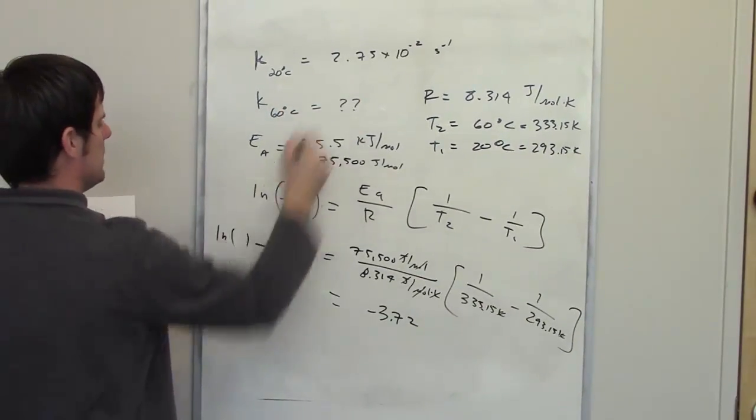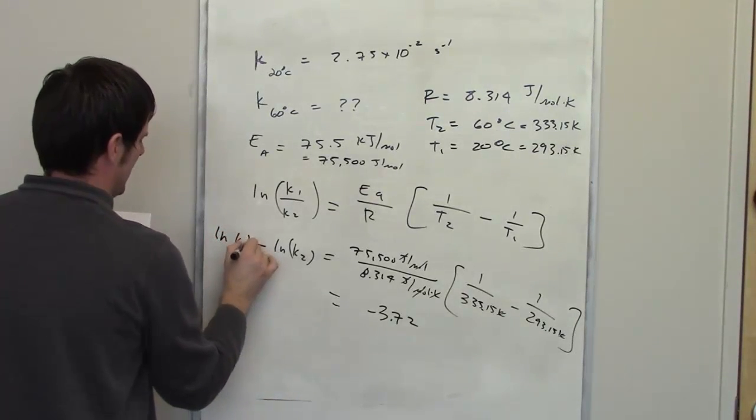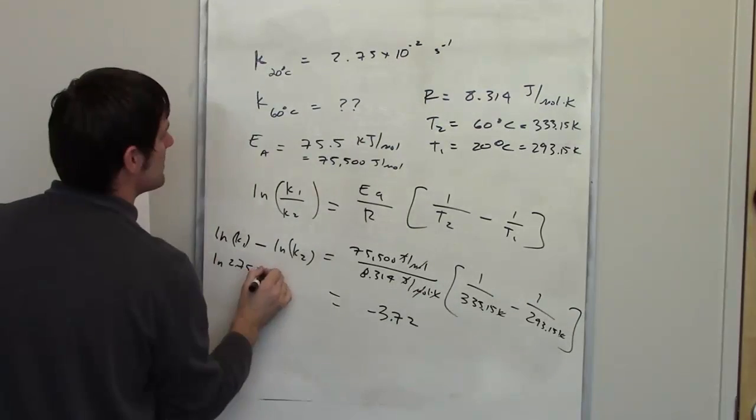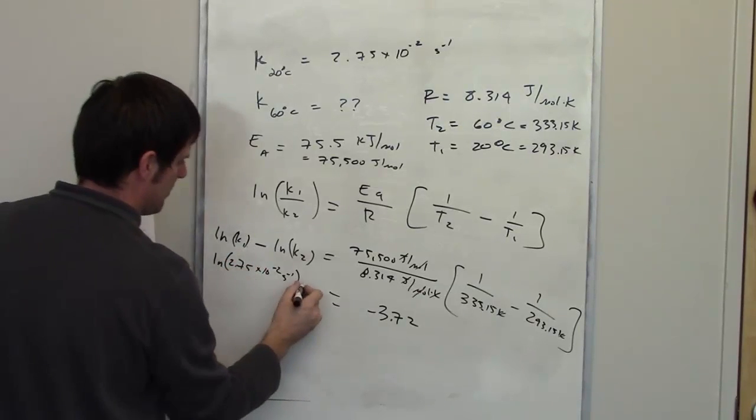LN of K1, K1 is 2.75 times 10 to the negative 2 inverse seconds. So I've got the LN of K1 minus the LN of K2, and K2 is the mystery thing, right?